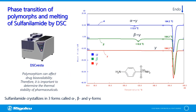Polymorphism in active ingredients can affect bioavailability. Therefore, it is important to determine the thermal stability of pharmaceuticals. Here is an application on the phase transitions in different forms of sulfonylamide using DSC. In the gamma form shown in the red curve, we can only see an endothermic peak at 164°C due to melting. However, in the alpha form shown in the blue curve, we can observe an endothermic peak near 114°C due to phase transition. Similarly, the phase transition in the beta form is observed near 119°C. Both materials exhibited another endothermic peak at 164°C due to melting, indicating that both materials have changed to gamma form.